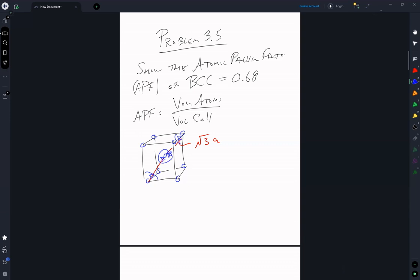So 4r means a is equal to 4 over root 3r.